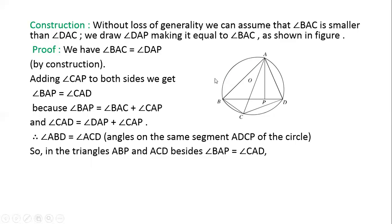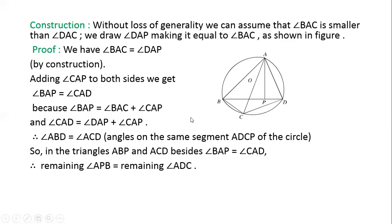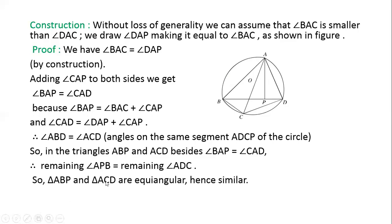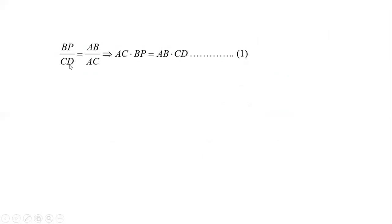So triangles ABP and ACD have angle BAP equal to angle CAD, and angle ABP equals angle ACD. Therefore the triangles are equiangular and hence similar. So BP/CD = AB/AC. By cross multiplication: AC · BP = AB · CD, which is equation number one.